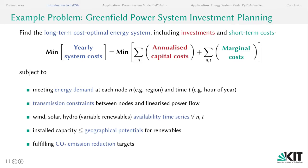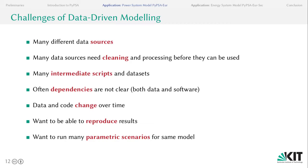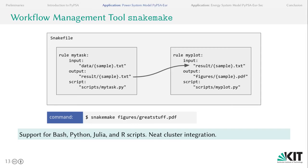We also consider geographical potentials for renewables and do this to fulfill a certain CO2 emission reduction target. Building these kinds of optimization problems for a whole continent can be quite a data-intensive project. The challenges of data-driven modeling include many different data sources that need cleaning and processing. We often create many intermediate scripts and datasets, and the dependencies between those are often not very clear. We also have the problem that data and code change over time while wanting to reproduce results at any time. Running parametric scenarios is always a very good idea, and what we need is a workflow management tool.